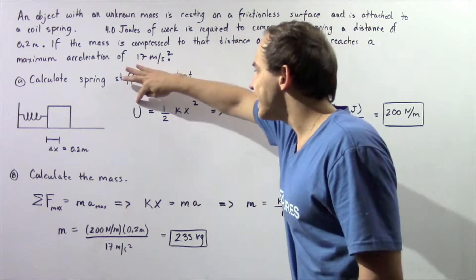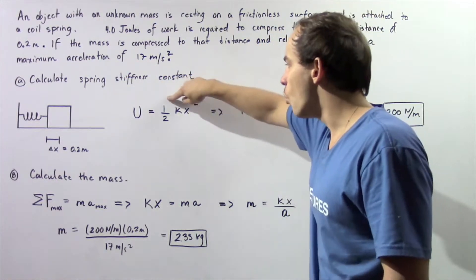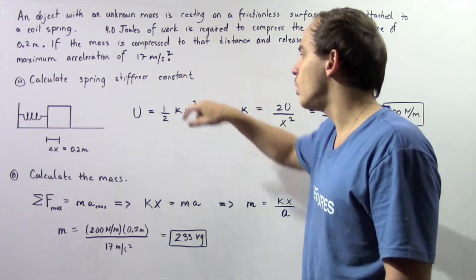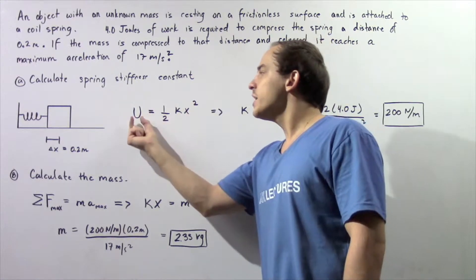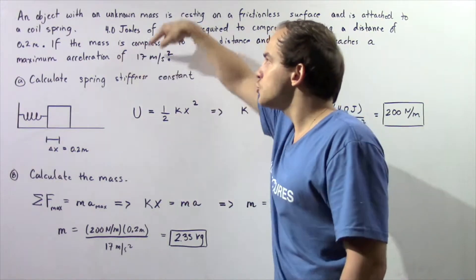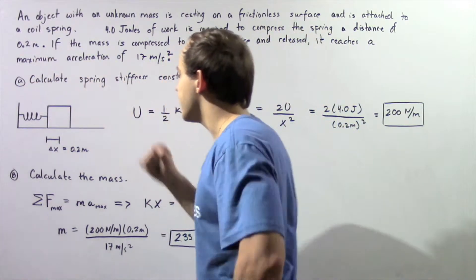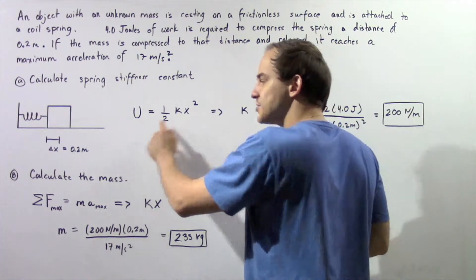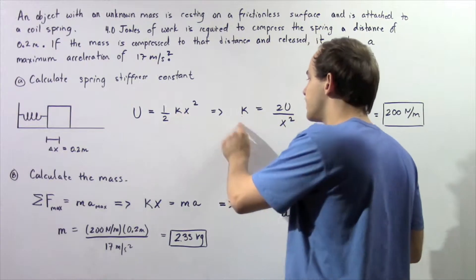We call that elastic potential energy U = ½Kx², where K is our spring stiffness constant and x is our displacement. We are told that 4 joules of energy is transferred to our spring, so U is 4 joules. We know that x is 0.2 meters. If we solve for K,